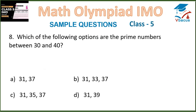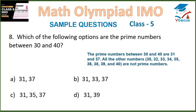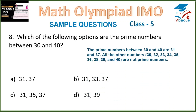Question 8: Which of the following options are the prime numbers between 30 and 40? The prime numbers between 30 and 40 are 31 and 37 only. All the other numbers — 30, 32, 33, 34, 35, 36, 38, 39, and 40 — are not prime numbers; they are composite numbers. Prime numbers are those which are divisible by 1 and the number itself, having only 2 factors. So, 31 and 37 are the prime numbers, which is in option A.